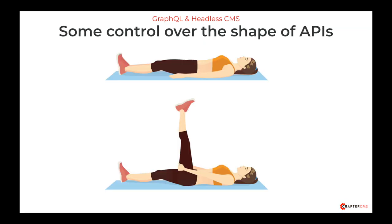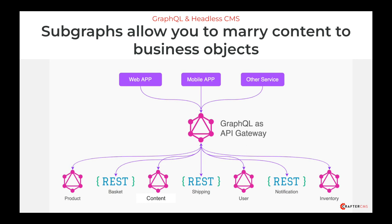GraphQL also gives you a degree of control over the shape of your API responses — the flexibility we don't get from REST APIs or from the many headless CMSs that only support REST. This flexibility helps us avoid vendor lock-in and deal with use cases that would otherwise require API versioning, which is technical debt. The support for API gateways, federations, and subgraphs is also a really big deal in the content management space. Marrying content to business objects is a major and very common use case. Products live in product information management systems; marketing content lives in content management systems. But what our applications want to present to users is a combination of the product data and the marketing content. GraphQL makes marrying these types of objects together very seamless, efficient, and easy for end-user applications.